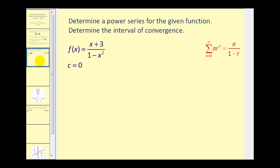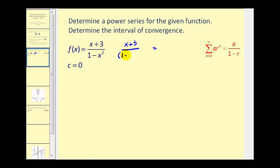The first thing we notice about this function is it doesn't fit the form of a divided by one minus r. In fact, we have the variable x in the numerator as well as in the denominator. So sometimes we have to find the partial fractions that would represent this function. Let's go ahead and perform partial fraction decomposition. The first thing we need to do is factor the denominator, so we'll have x plus three, and the denominator is a difference of squares, so we'll have one minus x times one plus x.